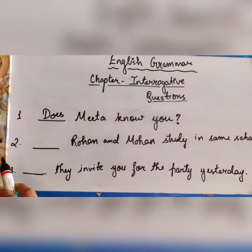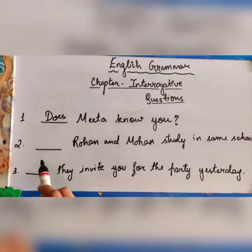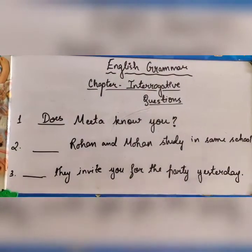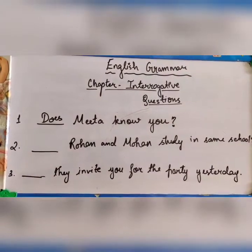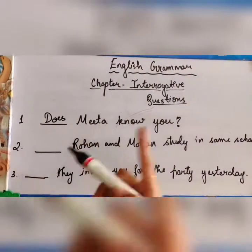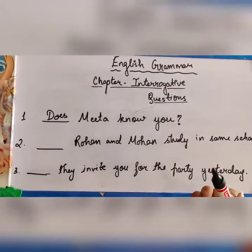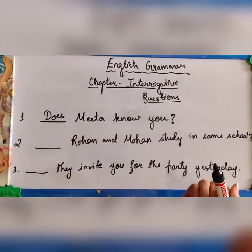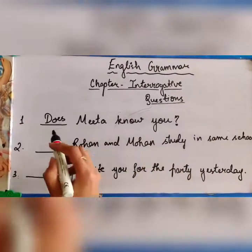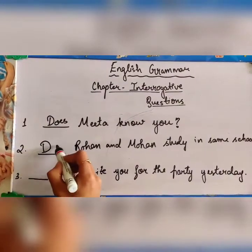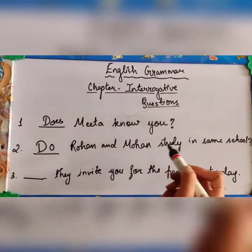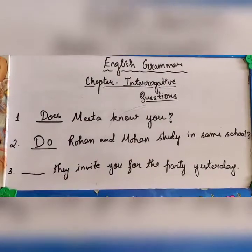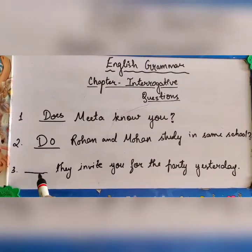Second example: 'Rohan and Mohan study in the same school.' Here we are talking about more than one person — Rohan and Mohan — and we are talking about present tense. So we will use 'do'. The question becomes: 'Do Rohan and Mohan study in the same school?'